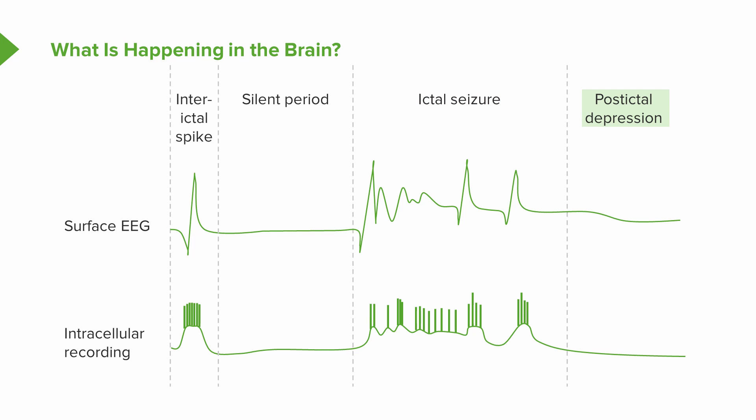After the seizure, we see post-ictal depression — a very calm, flat, quiet brain with very reduced, low-amplitude activity and not a lot of high frequency. The brain typically appears very slow, with slow-frequency waves during that period. You can see correspondingly at the bottom of the slide what's happening within each individual cell. The surface EEG is measuring what's going on in many cells, and intracellularly, you can see what's happening on a neuron-specific basis.